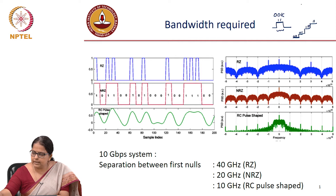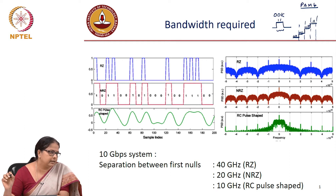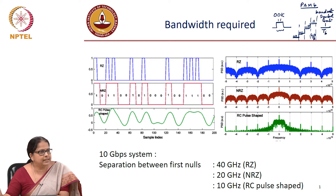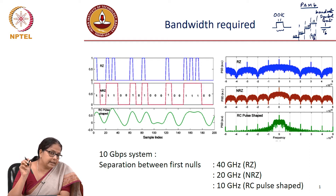For instance, if I am transmitting PAM4, this is one symbol duration, this is the second, third, and fourth symbol duration. The amplitude levels correspond to the symbol level. You talk about baud rate or symbol rate — if this is Tb, your baud rate or symbol rate is 1 divided by Tb. Whereas your bit rate, if it is PAM4, is symbol rate multiplied by 2 because every symbol represents 2 bits.